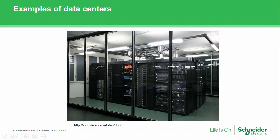Here we have a showpiece data center with a glass wall and glass room for physical security. You'll notice doors at the end of the aisles, indicating some kind of containment — most likely hot aisle containment. There's also an in-row type cooling unit and chilled water piping above, so this is a chilled water cooling system.